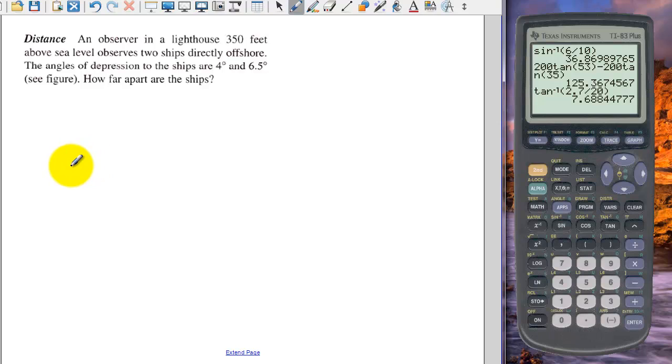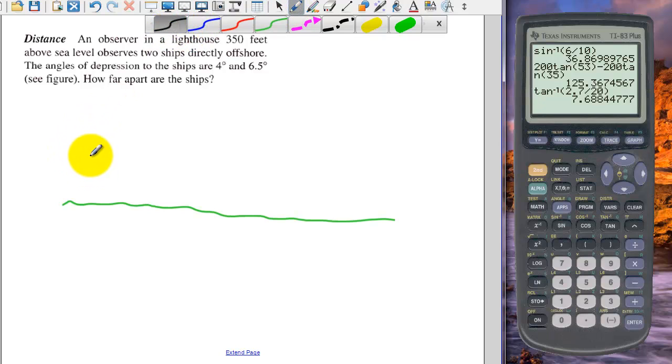Okay, we have an observer and a lighthouse. So we have our water, ocean, whatever. And the lighthouse is on the shore here. So we have a lighthouse here. And the observer is up here at the top.